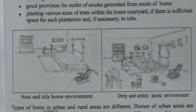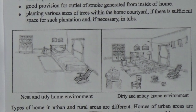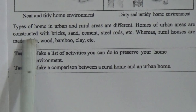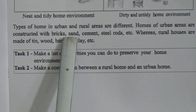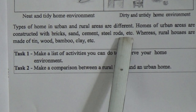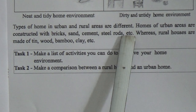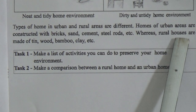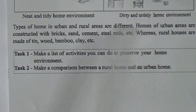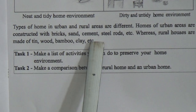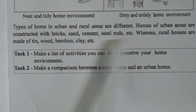Types of homes in urban and rural areas are different. Homes in urban areas are constructed with bricks, sand, cement, steel rods, etc. Whereas rural houses are made of tin, wood, bamboo, clay, etc.